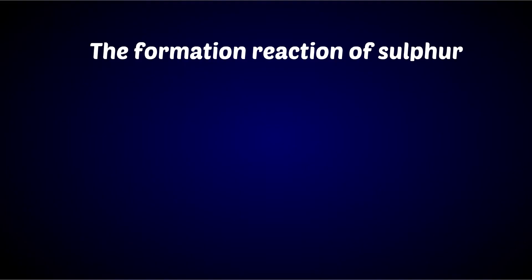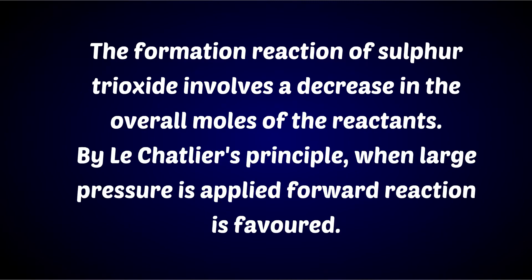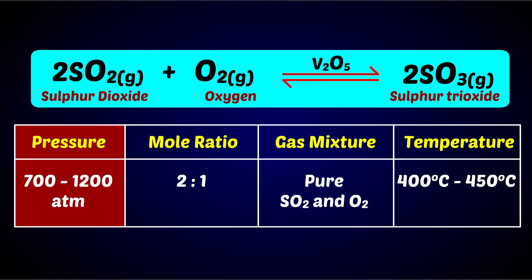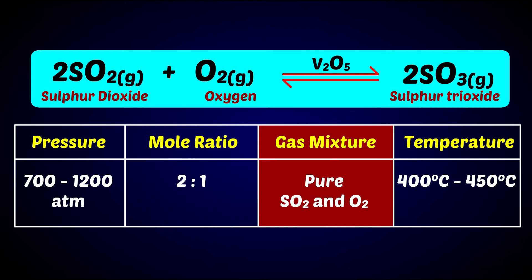Explain the contact process. The formation reaction of sulphur trioxide involves a decrease in the overall moles of the reactants. By Le Chatelier's principle, when large pressure is applied, the forward reaction is favored. 700 to 1200 atmospheric pressure is maintained on the 2:1 mole ratio mixture of pure sulphur dioxide and oxygen gases in the reaction chamber.